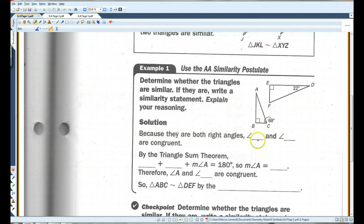Because they are both right angles, angle B and angle E are congruent.